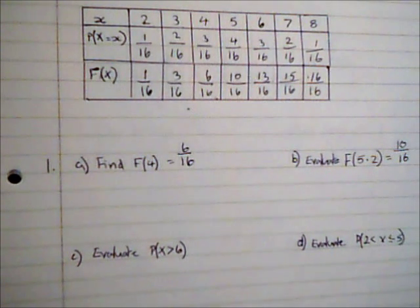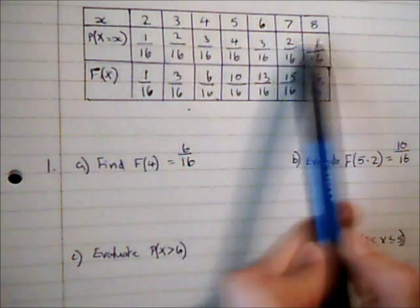So two more to look at. Now this time this is written as a probability, so evaluate the probability that x is greater than 6. So it cannot be equal to 6, it must be greater, so I'm only looking at the 7 and the 8.